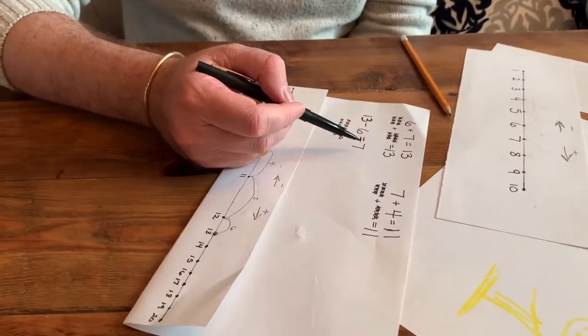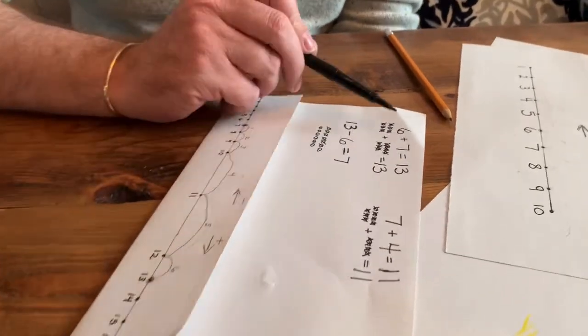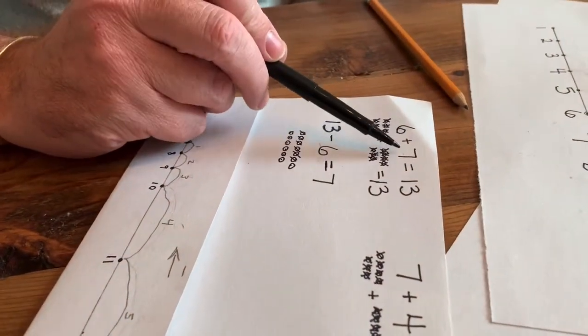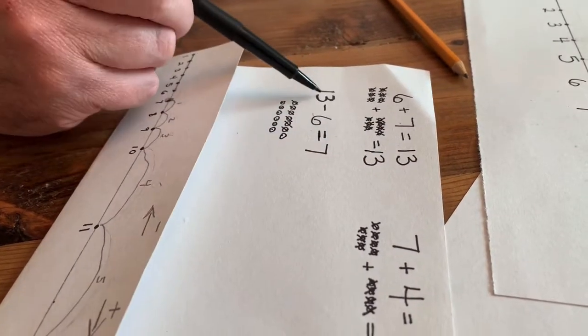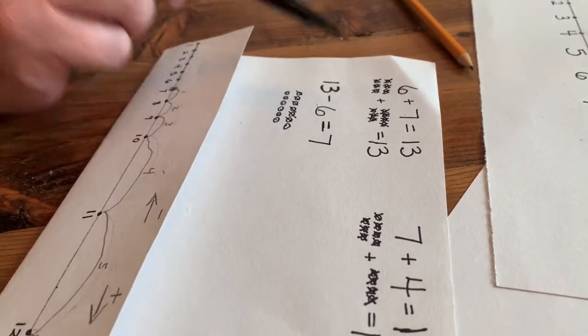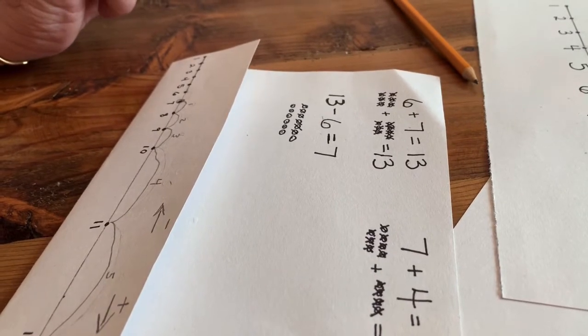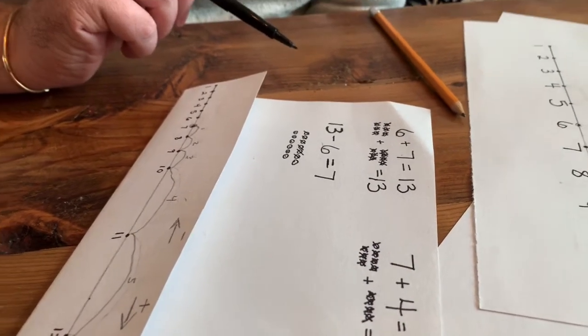And if you look, it's just the reversal of the addition. 6 plus 7 equals 13. 13 minus 6 equals 7. So that's called a fact family. We'll learn about that some other time. But that is a fact family. It means they are in the same family. So you just learned something new. A fact family.